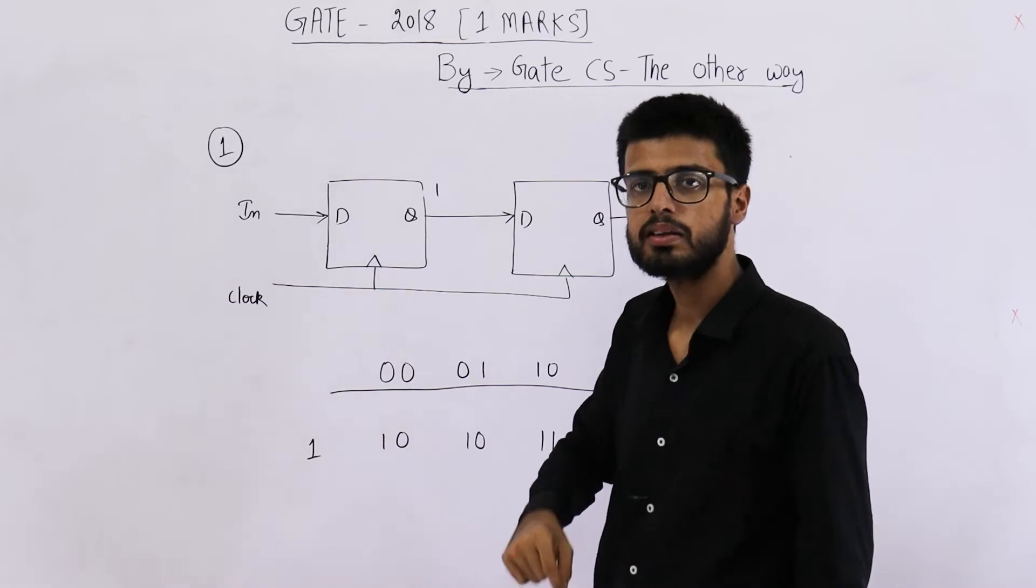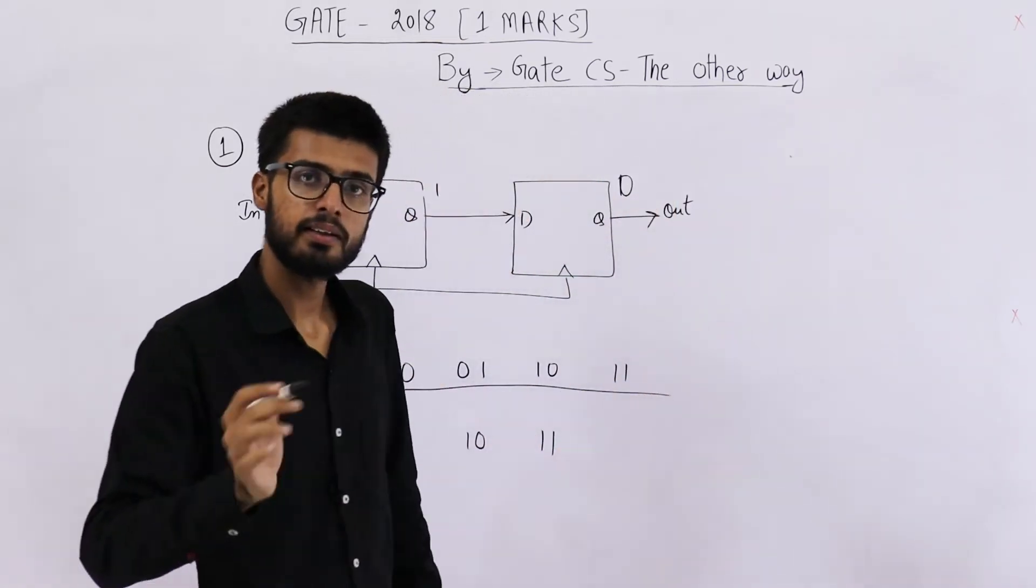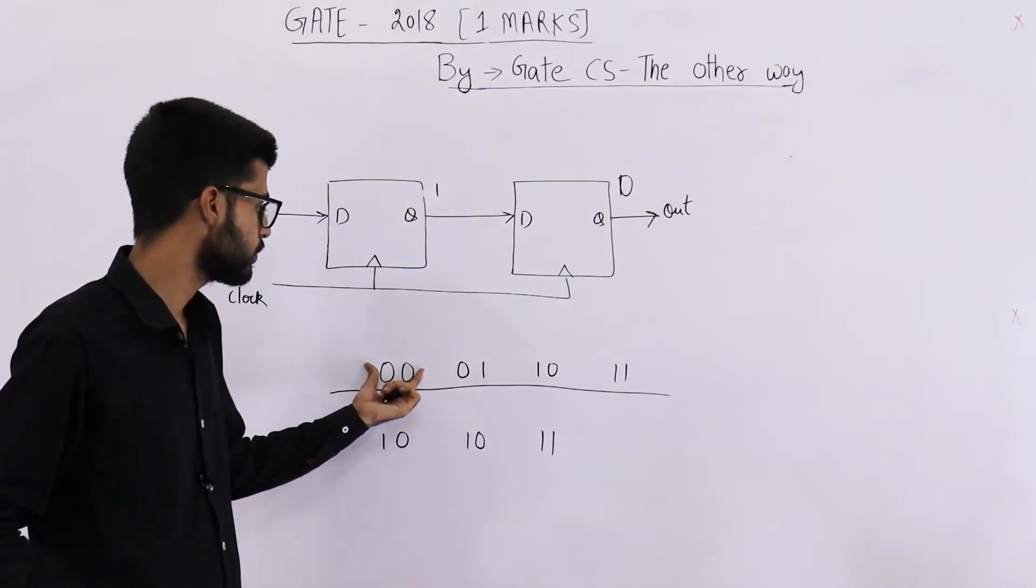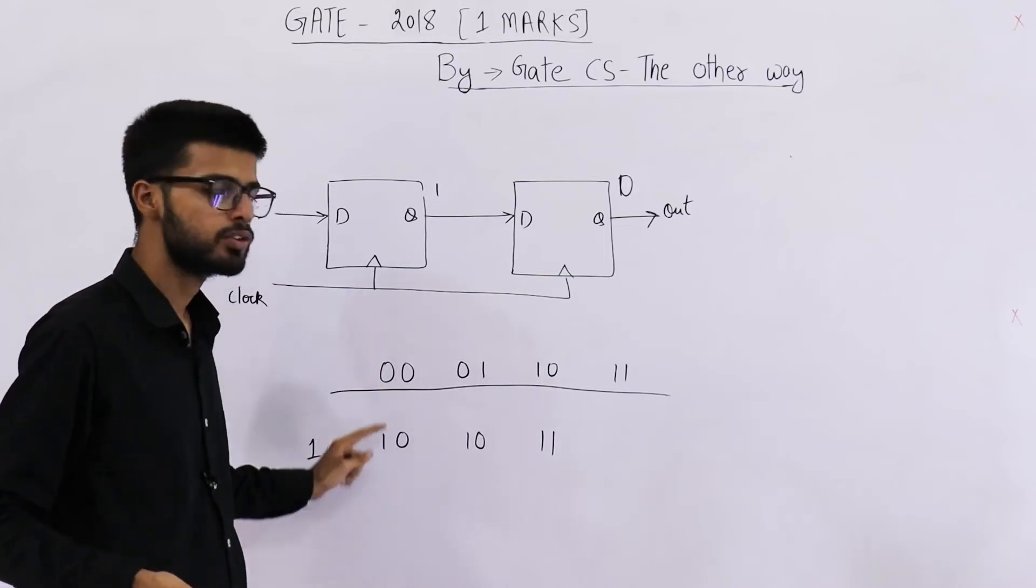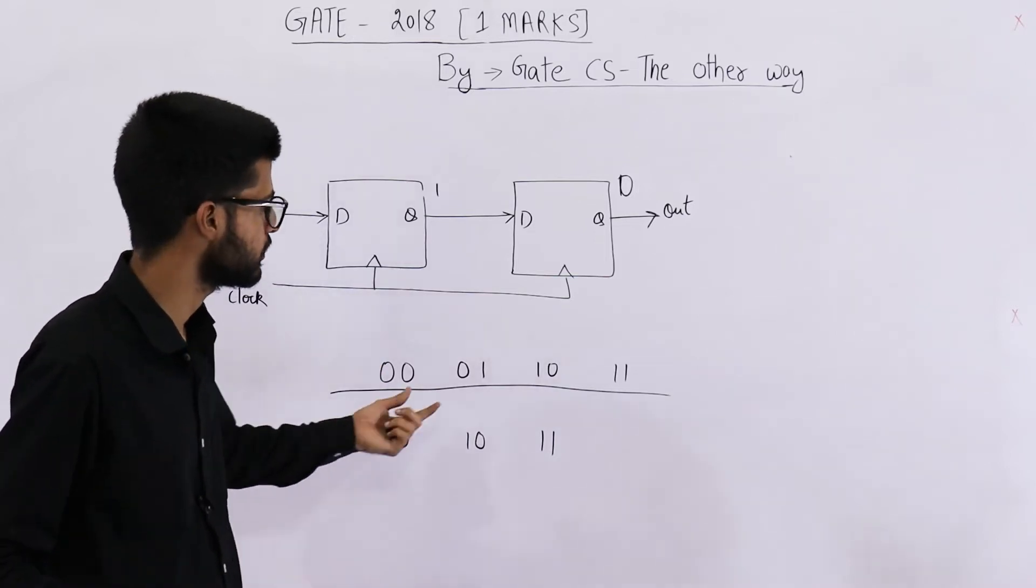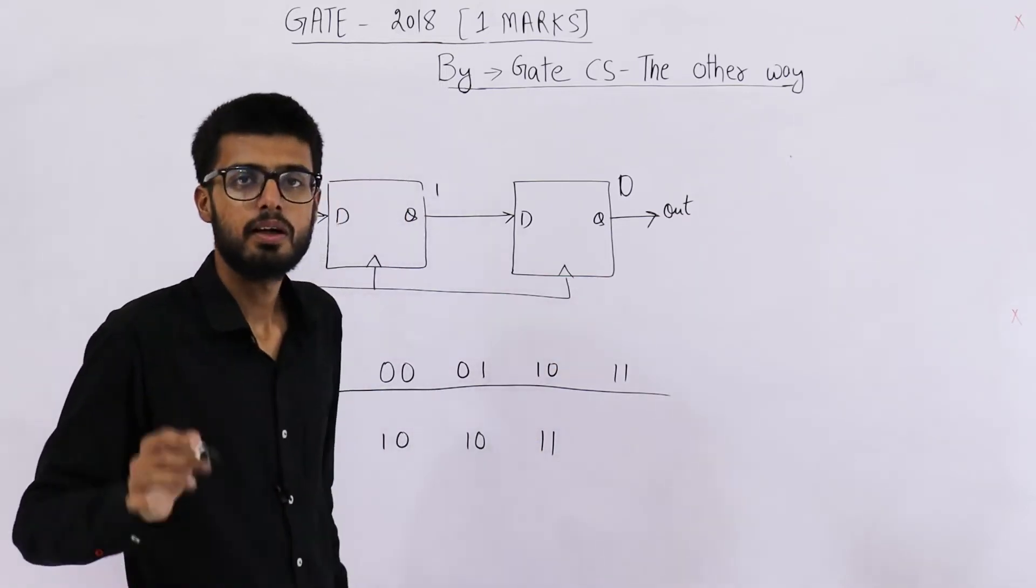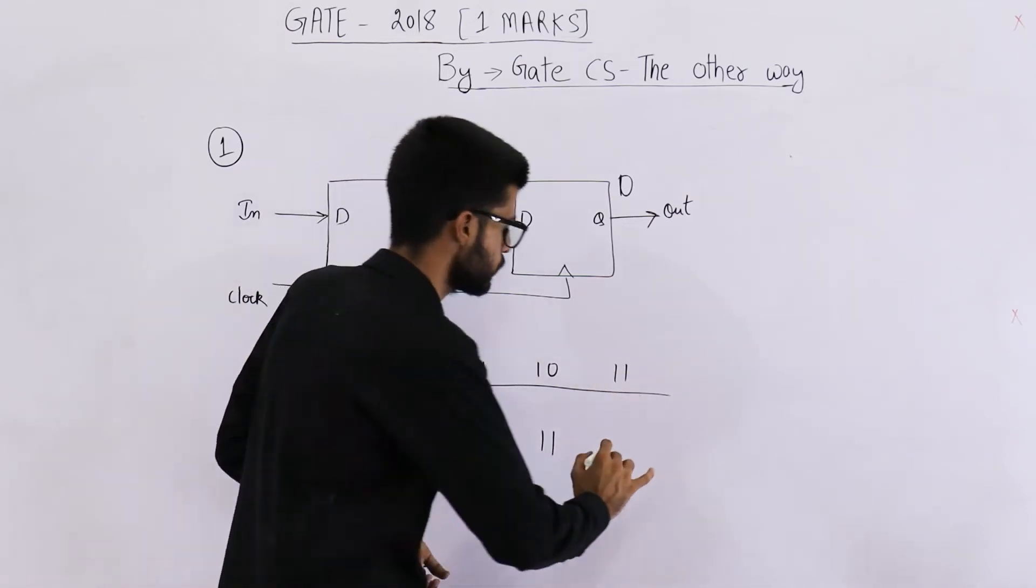Now suppose the current state is 1, 1. In this case, you will have a self loop. See, earlier state was 0, 0. The next state is 1, 0. So it is not a self loop. We are actually changing the state. Here also we are changing the state. Here also we are changing the state. But when the current state is 1, 1, next state will also be 1, 1.